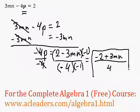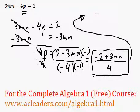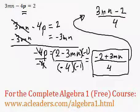That's it. I'm just going to rewrite it one more time to 3mn minus 2 all over 4. And all these guys are perfectly equivalent.